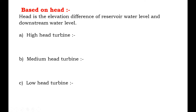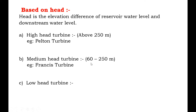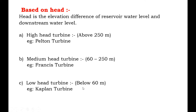For the high head range — above 250 meters — the example is the Pelton turbine. For the medium head range of 60 to 250 meters, the example is the Francis turbine. For the low head turbine, the example is the Kaplan turbine.